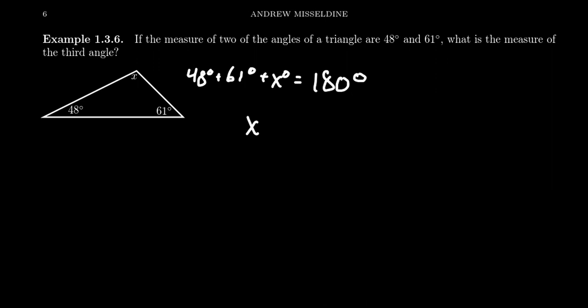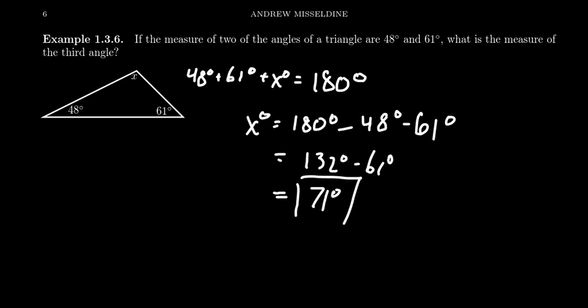So to solve for X, we just take 180, and we subtract from it 48 degrees, and we have to subtract from it 61 degrees. Which is a fairly simple chore of arithmetic here. 180 degrees take away 48 degrees would be 132 degrees. Then if we take away 61 degrees, we end up with 71 degrees. And so that missing angle must have been 71 degrees. And we can figure that out because the angle sum adds up to 180 degrees each and every time.